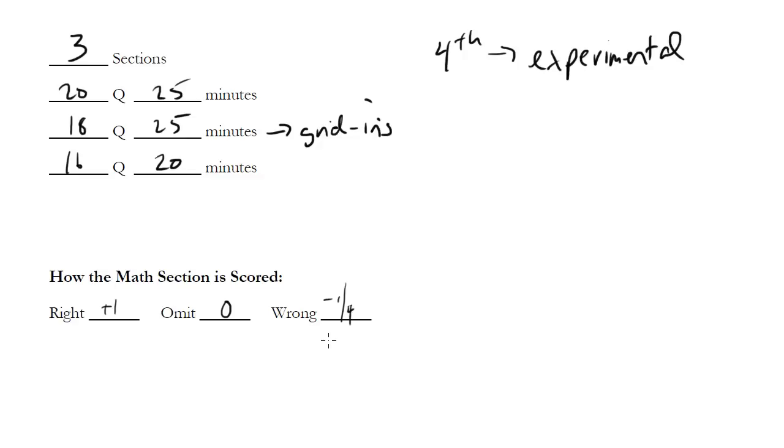We talk in a future video about guessing. One thing about the wrongs is that you actually don't get this minus one quarter for the grid-ins. For the grid-ins you just get no credit. So feel free to guess as much as you like on the grid-ins because there's no penalty to getting it wrong.